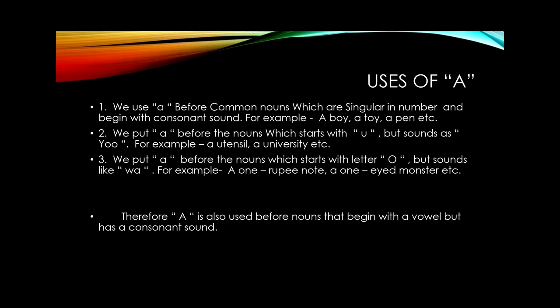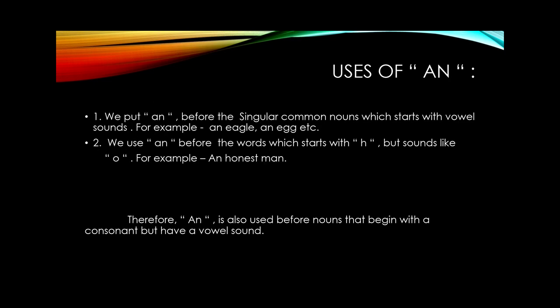The first use of 'an' is: we put 'an' before singular common nouns which start with vowel sounds. For example, an eagle, an egg, etc. Here, the words eagle and egg are common nouns, singular, as well as they have started with the vowel 'e'. That's why we have put 'an' before them. It means that 'a' is entrusted with the consonant sounds, whereas 'an' is entrusted with the vowel sounds.